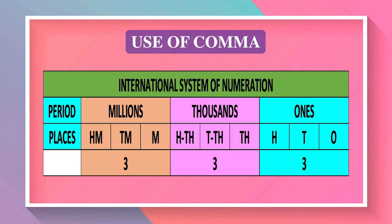In the international system of numeration, the first period has three places: ones, tens, and hundreds. The second period 'thousands' has three places: thousands, 10,000, and 1,00,000. The third period 'millions' has three places: million, 10 million, and 100 million. So in the international system, we put commas from the right as 3, 3, 3.